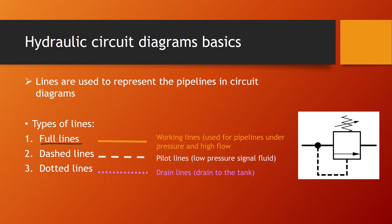There are a couple of types of lines. Full lines represent the working lines, which are used to represent the pipelines that are under high pressures and high flow rates. We have dashed lines, which are called pilot lines. Now these lines transfer low pressure signal fluid. What does that mean?